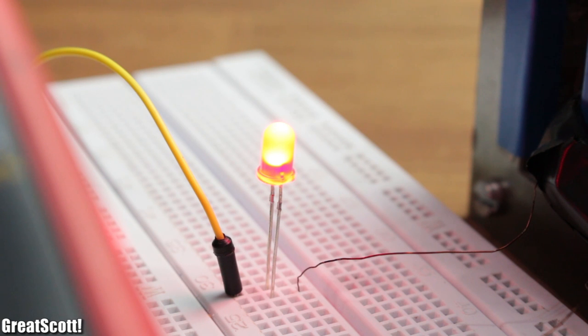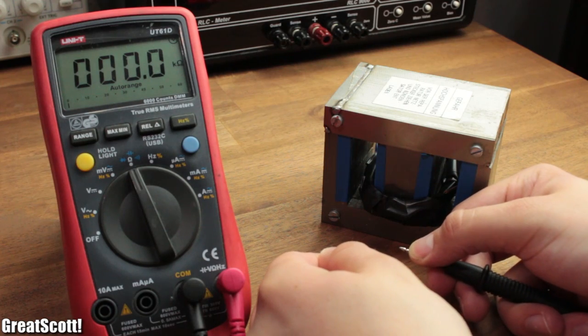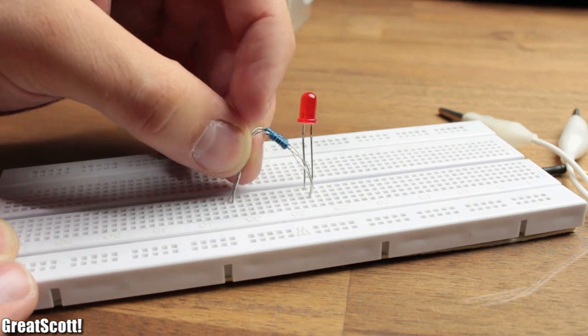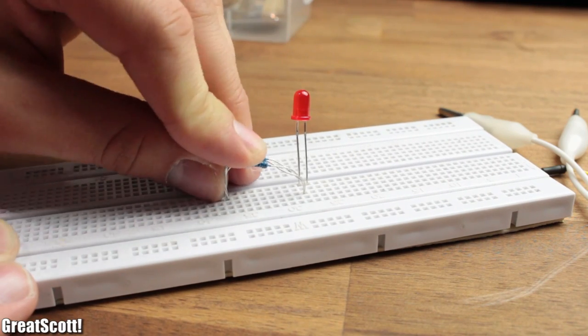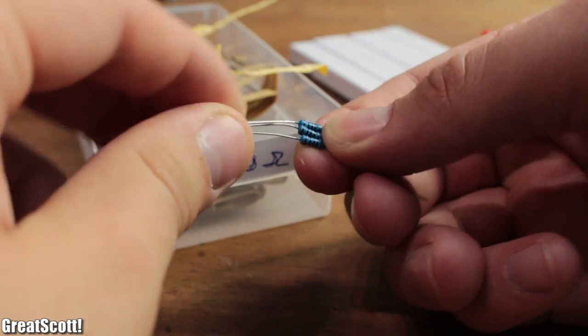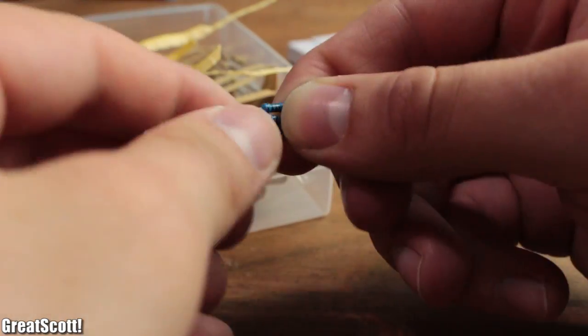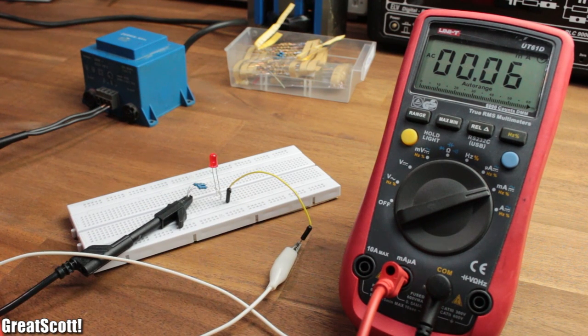But that is weird because the resistance of the coil is only around 34.5 ohms. If I would replace it with a fitting resistor of around 33 ohms by placing 3 100 ohm resistors in parallel, the LED would still get destroyed.